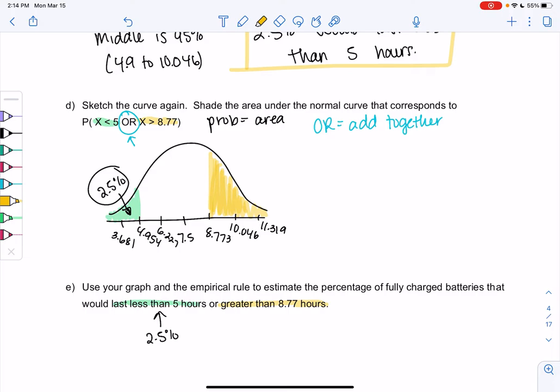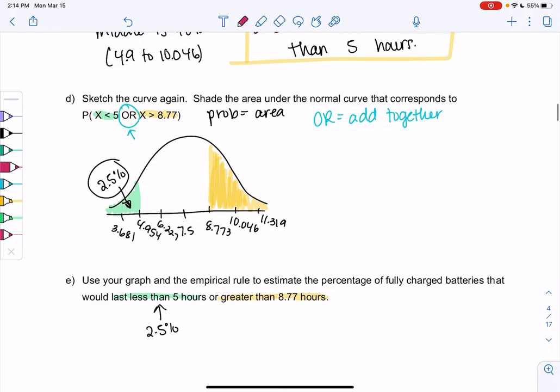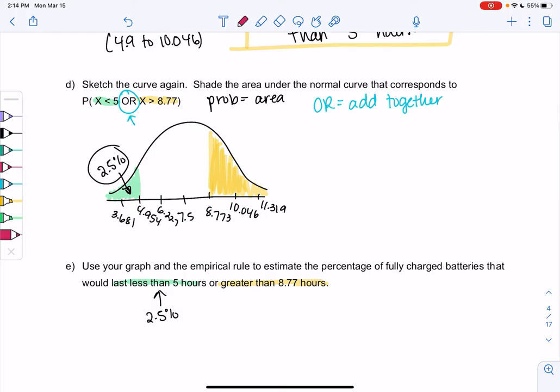It's not also 2.5. Notice it's a different size. So what I noticed about 8.77 is that was 1 standard deviation. 7.5 is the middle. So 6.2 to 8.7 would be 1 standard deviation.